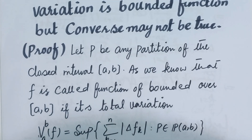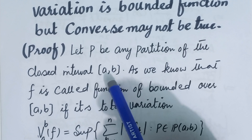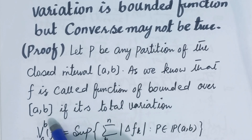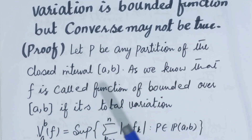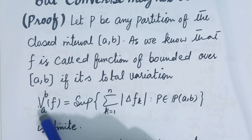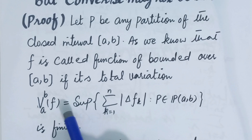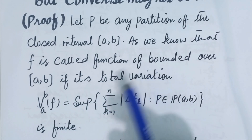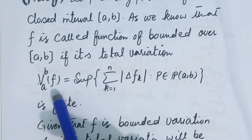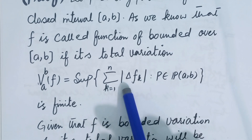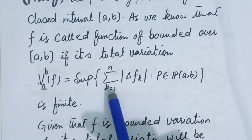Firstly, we will take a partition P of a closed interval [a, b]. As we know, a function f is called a function of bounded variation over [a, b] if the total variation of f — represented as V(a, b, f), which is the supremum of the sum of variations — is finite. The total variation is finite if the supremum is a finite real number, meaning the sum is bounded and the supremum exists.